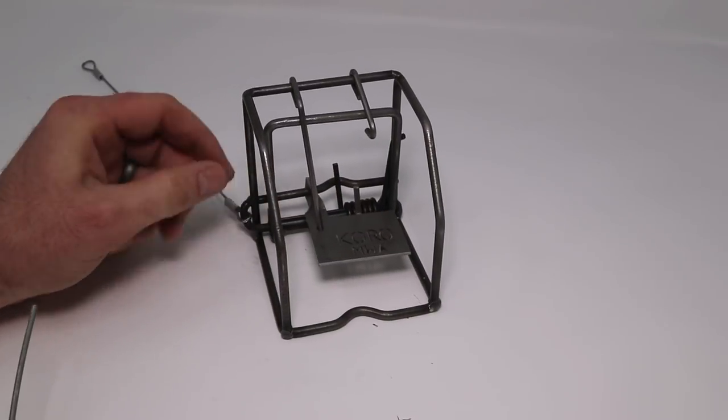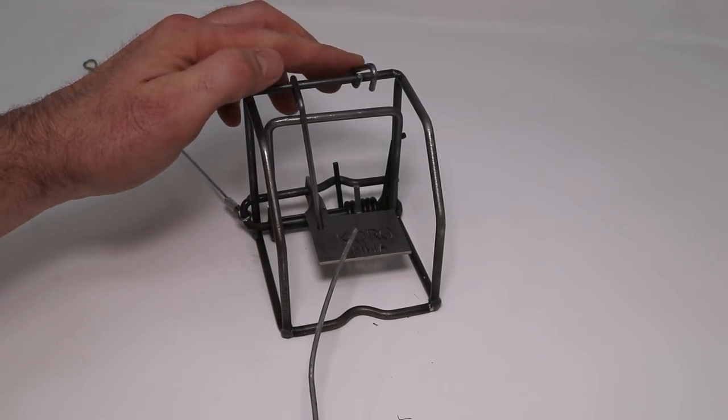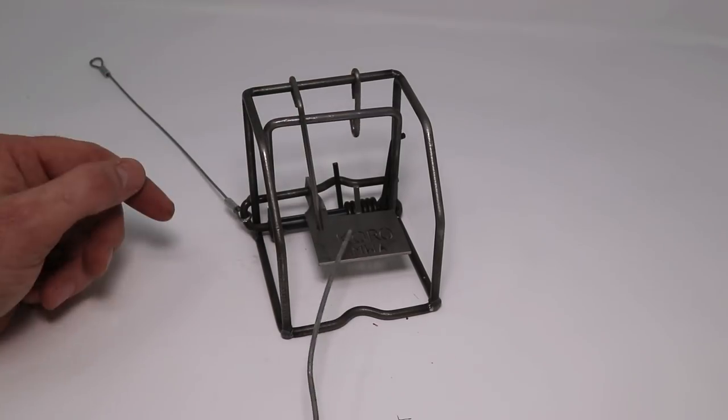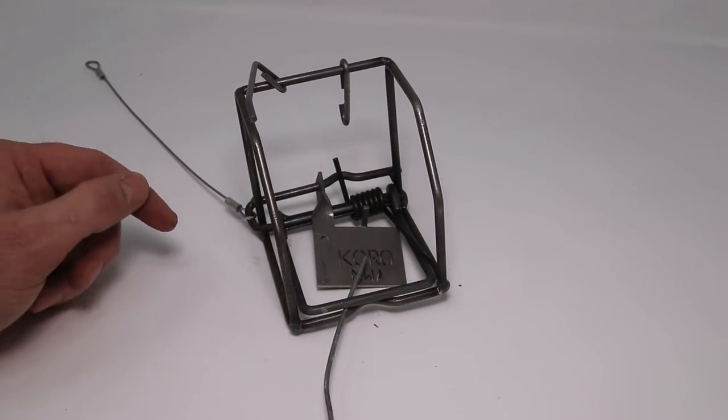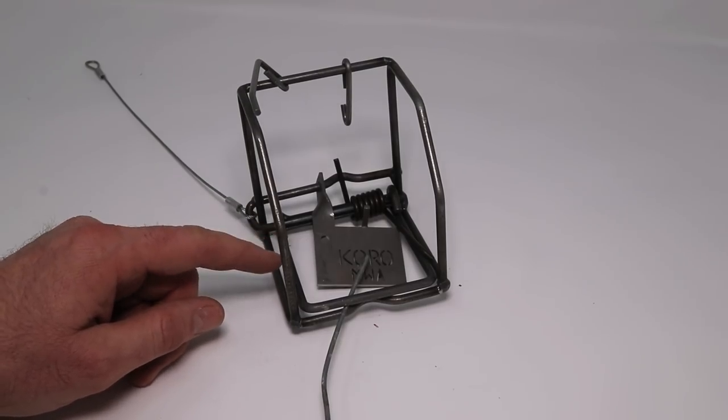The way it works is an animal is going to come along, want to get the bait, put its feet on this pad. Before I show you this you have to remember to take the safety catch off. It will step on that pad. That kill bar comes down and it will hold it in place and should instantly kill it. That's a very powerful spring.